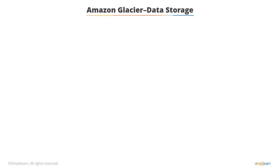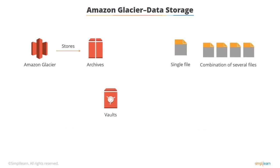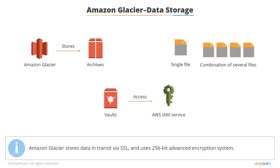When you preserve data in Amazon Glacier, it is stored as archives. This enables a user to store a single file or a combination of several files. Archives are arranged in vaults, which can be accessed using the AWS IAM service. Amazon Glacier stores data in transit via SSL and uses the 256-bit Advanced Encryption Standard.